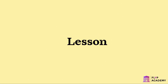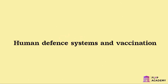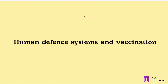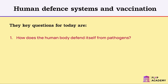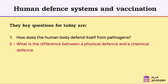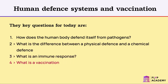Welcome to our lesson on human defence systems and vaccination. The key questions for today are: 1. How does the human body defend itself from pathogens? 2. What is the difference between a physical defence and a chemical defence? 3. What is an immune response? 4. What is a vaccination? 5. How do vaccinations work?